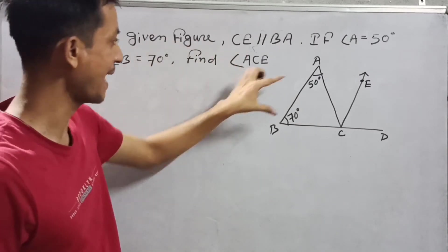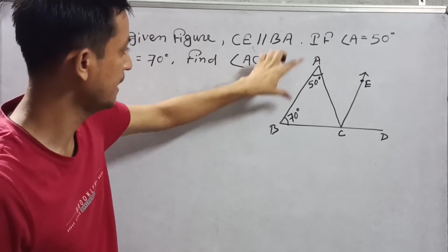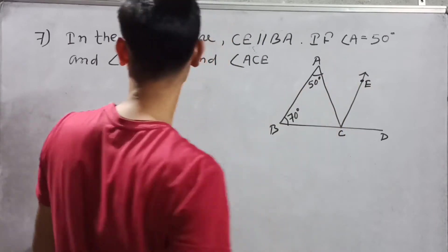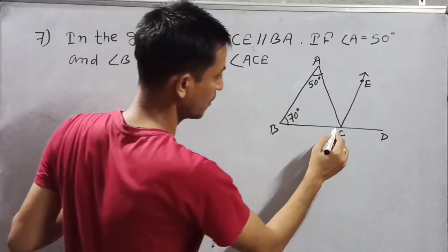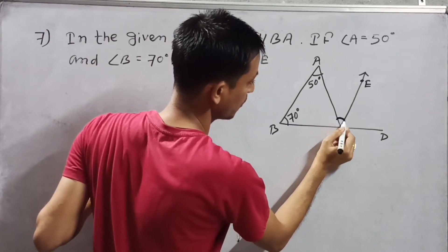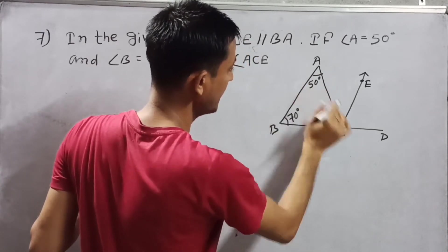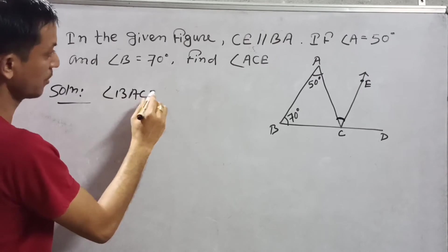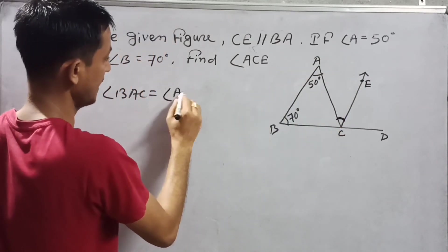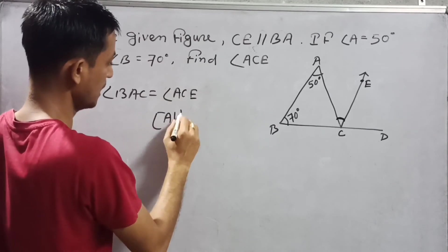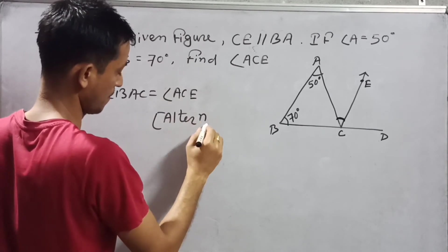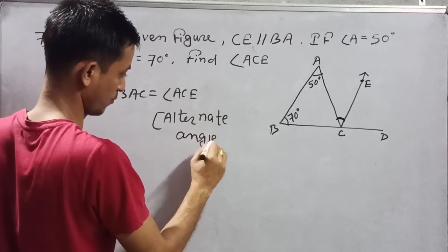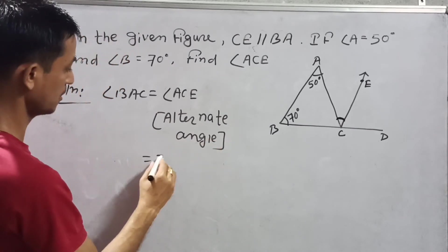In the given figure, CE is parallel to BA. If angle A is 50 degrees and angle B is 75 degrees, we find angle ACE. We have angle BAC equal to angle ACE as alternate angles. That is 50 degrees.